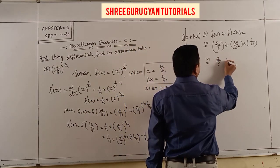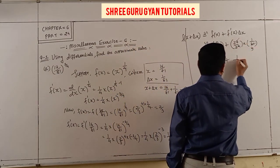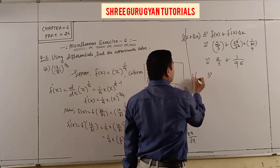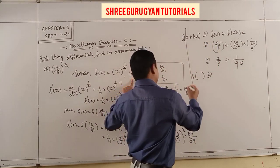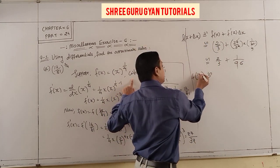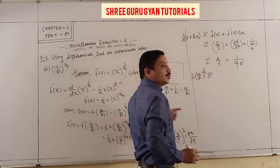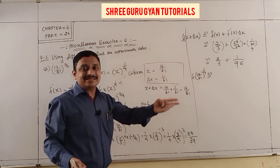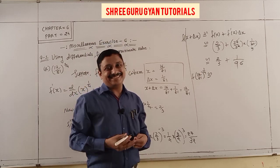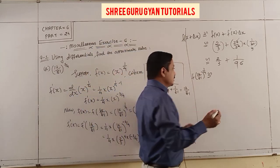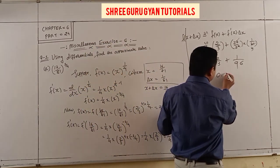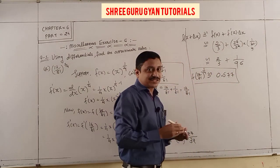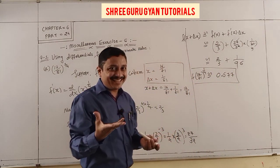So 2/3 + (27/32)·(1/81) — simplify using your calculator. The whole answer for (17/81)^(1/4) is approximately 0.677. Our first question is easily done.